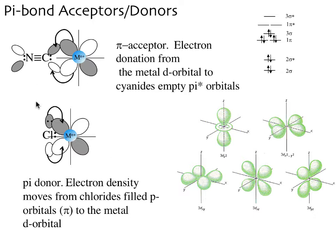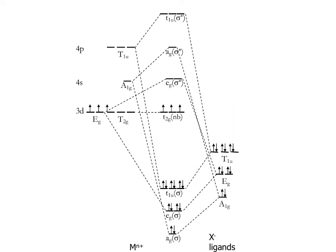So the difference here is: cyanide has empty pi star orbitals which can accept electron density from the metal, and chloride has filled p orbitals of pi symmetry that can donate electron density into the metal. Why does this have the effect that cyanide is a strong field ligand and chloride is a weak field ligand? Well, in order to understand that, we need to look at our MO diagram for our metal ion complex.